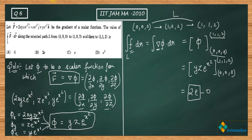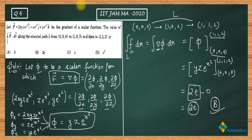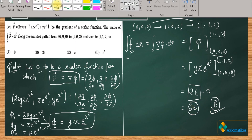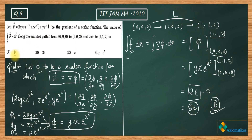Let me check the calculation once more. The answer is 2e, so B is the correct answer. A is incorrect, B is true, C is incorrect, D is incorrect. This is how we can proceed.